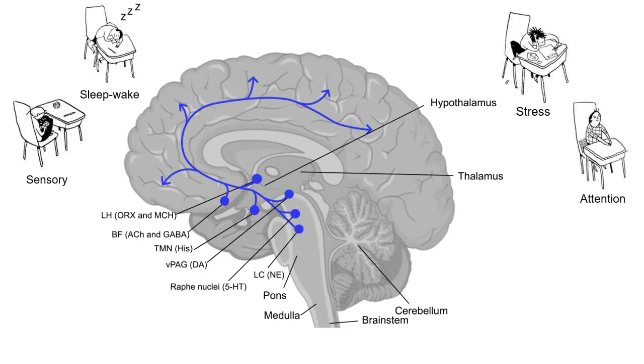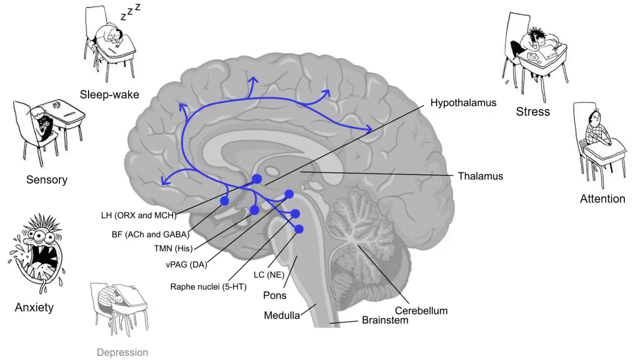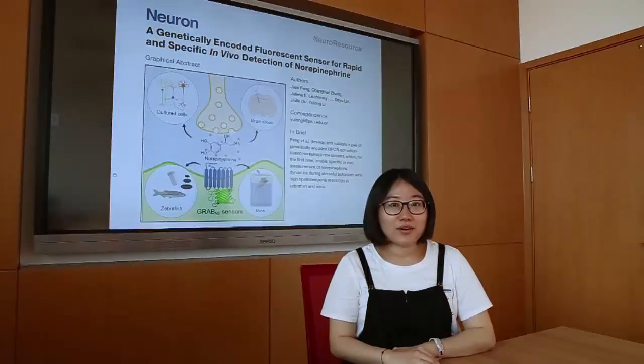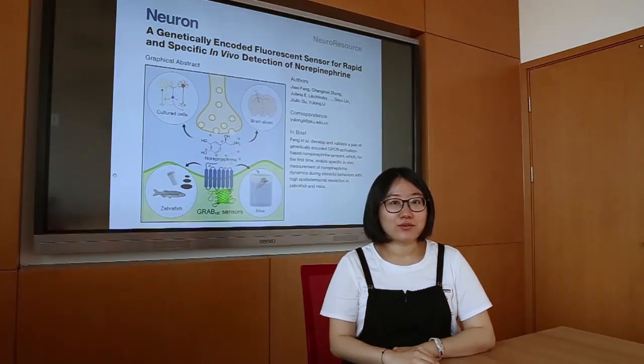Disrupting noradrenergic transmission causes impaired cognition and is closely correlated with a variety of psychiatric conditions and neurodegenerative diseases, including anxiety, depression, attention-deficit hyperactivity disorder, and Parkinson's disease. It is therefore particularly critical to detect NE dynamics with good spatial temporal resolution in complex neural circuits in order to fully understand its regulation and alteration.